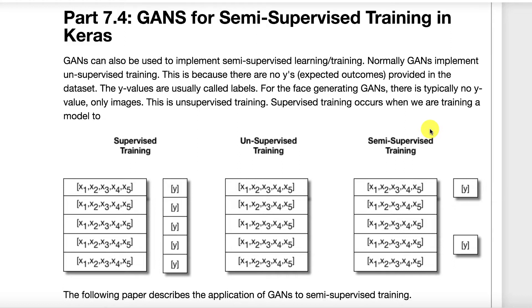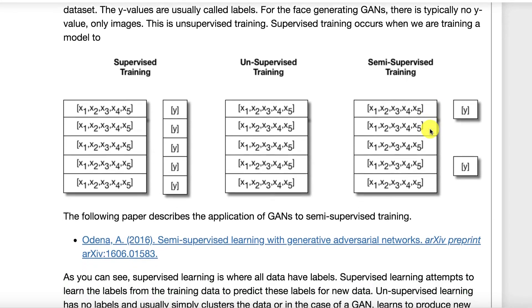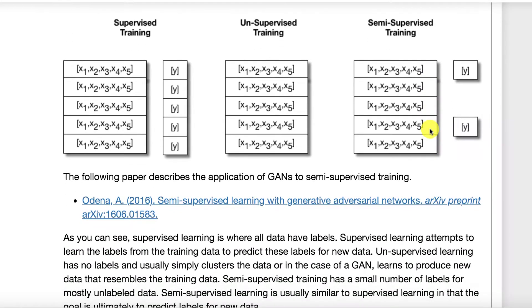Another area that we are seeing GANs use for a great deal is in the area of semi-supervised training. So let's first talk about what semi-supervised training actually is and see how a GAN can be used to implement this.